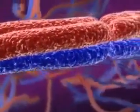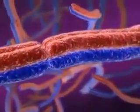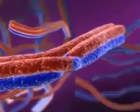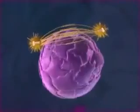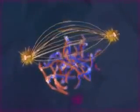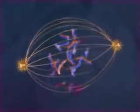In meiosis, homologous chromosomes stick together in pairs. The close association of homologous chromosomes allows segments of non-sister chromatids to trade places. This recombination of maternal and paternal genetic material is a key feature of meiosis.